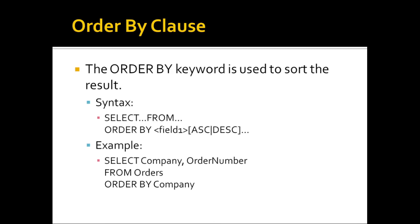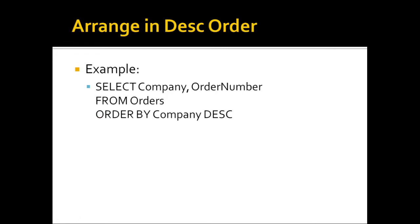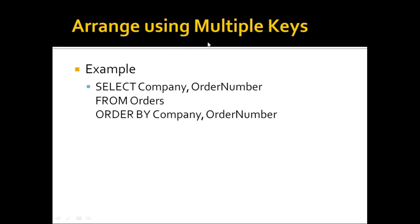The ORDER BY keyword is used to sort the result set. The syntax is 'SELECT ... FROM table ORDER BY field' either in ascending or descending order — by default it is ascending. To sort in descending order, add the DESC keyword after the field name. You can also use multiple sort keys, for example 'SELECT * FROM orders ORDER BY company, order_number' — sorted first by company, then by order number.